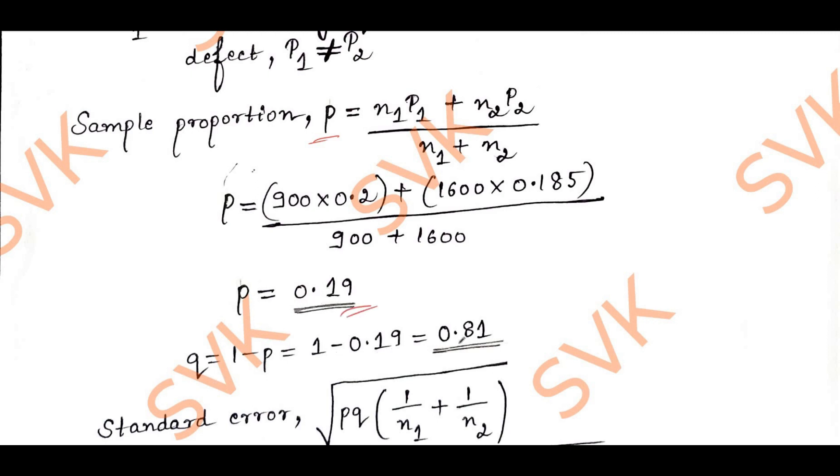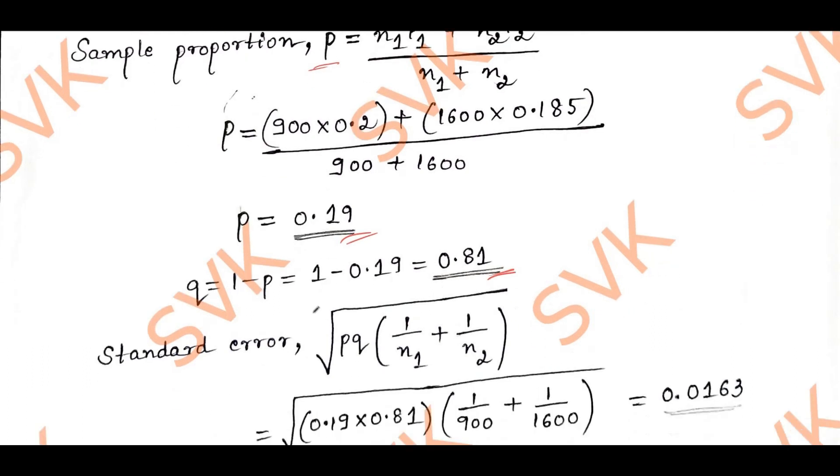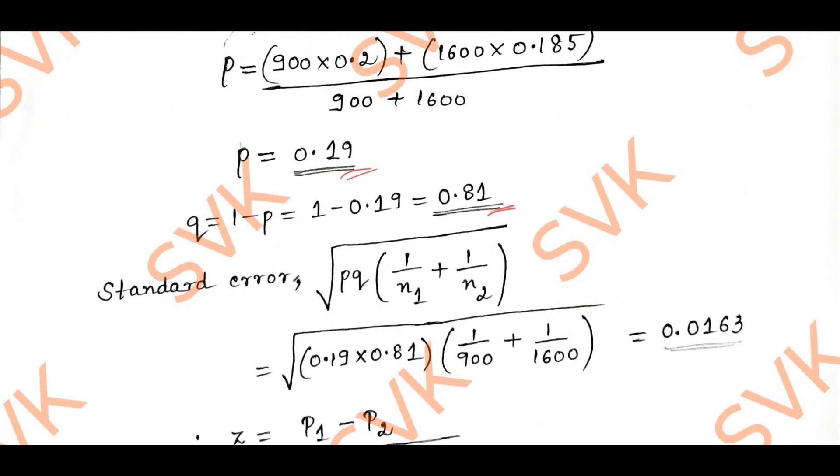After getting the value of P, I can find Q. Q = 0.81. After getting P and Q, I am going to find the standard error given by the formula square root of PQ(1/N1 + 1/N2). Substituting all those values gives standard error = 0.0163.